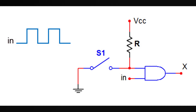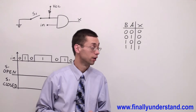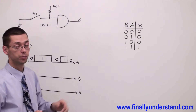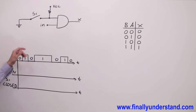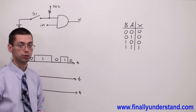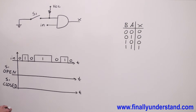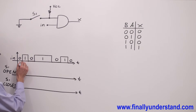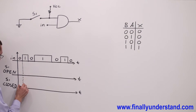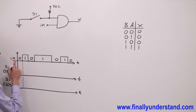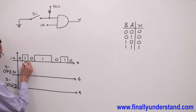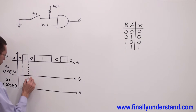Let's take a look at this example. This time we're supposed to determine the output waveforms for the two-input AND gate. We're going to determine the output waveform when the switch is open and when the switch is closed, keeping the same input waveform. To find the output waveforms, always draw a dash line at every single change of the input waveform — any transition from zero to one or one to zero.